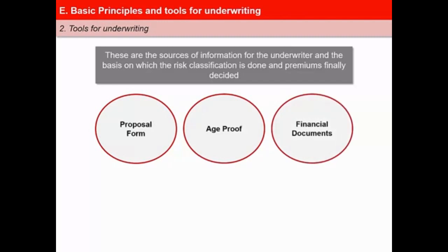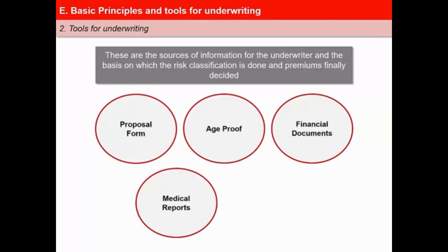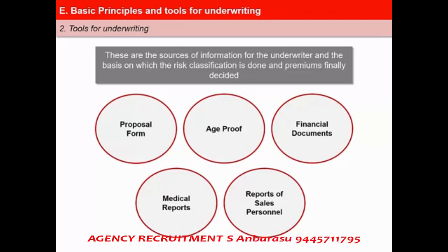Third, financial documents: knowing the financial status of the proposer is particularly relevant for benefit products and to reduce the moral hazard. However, normally the financial documents are only asked in personal accident covers, high-sum assured coverage, and when the stated income and occupation show a mismatch. Fourth, medical reports: requirement of medical reports is based on the norms of the insurer and usually depends upon the age of the insured and sometimes on the amount of the cover opted. Some replies in the proposal form may also contain some information that leads to medical reports being asked for. And fifth, reports of sales personnel: sales personnel can also be seen as the grass-root level underwriters for the company and the information given by them in their report could form an important consideration.